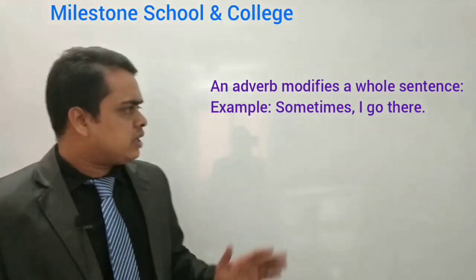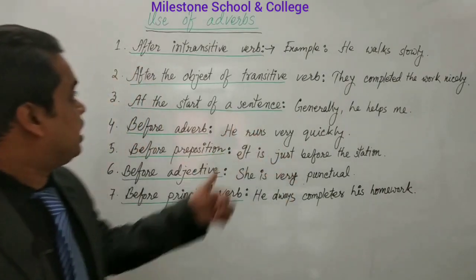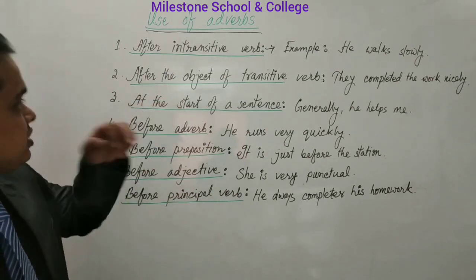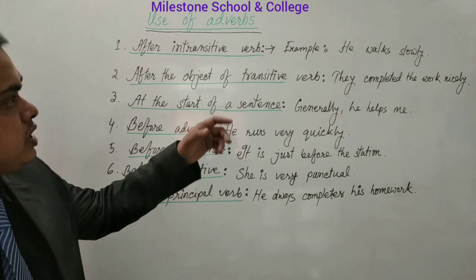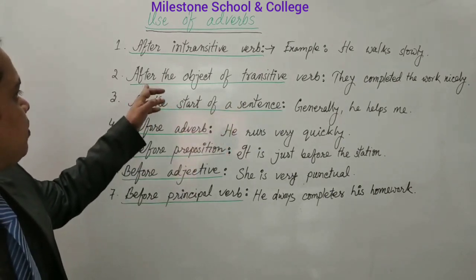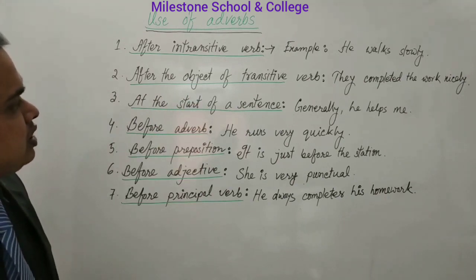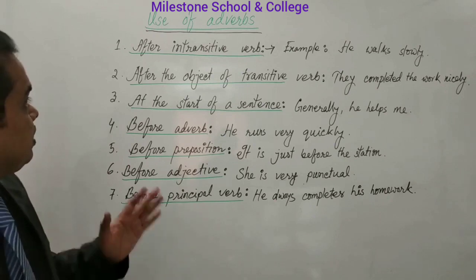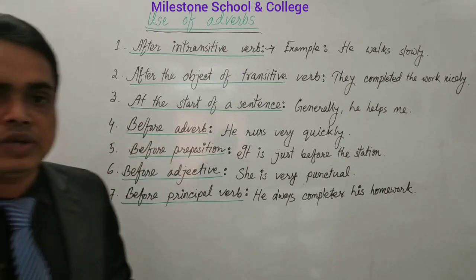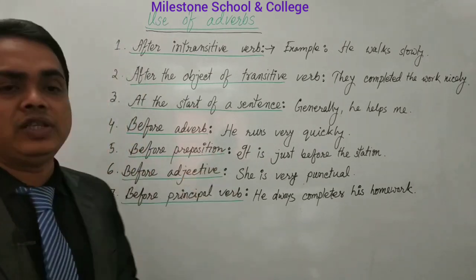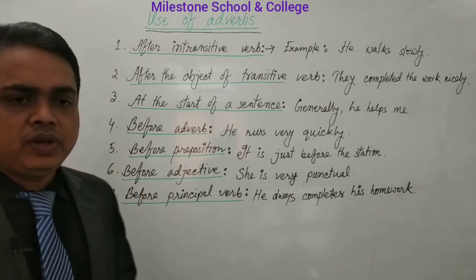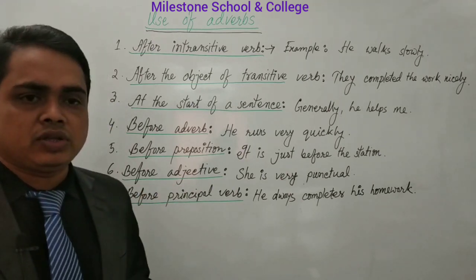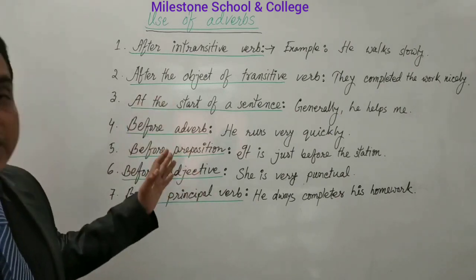Now, dear students, we are going to learn the use of adverb. First: after an intransitive verb, we use adverb. Second: after the object of a transitive verb, we use an adverb. Third: at the start of the sentence, we also use an adverb. Fourth: before an adverb, we also use an adverb. Fifth: before a preposition, we use an adverb. Sixth: before an adjective, we also use an adverb. And before the principal verb, we also use adverbs.